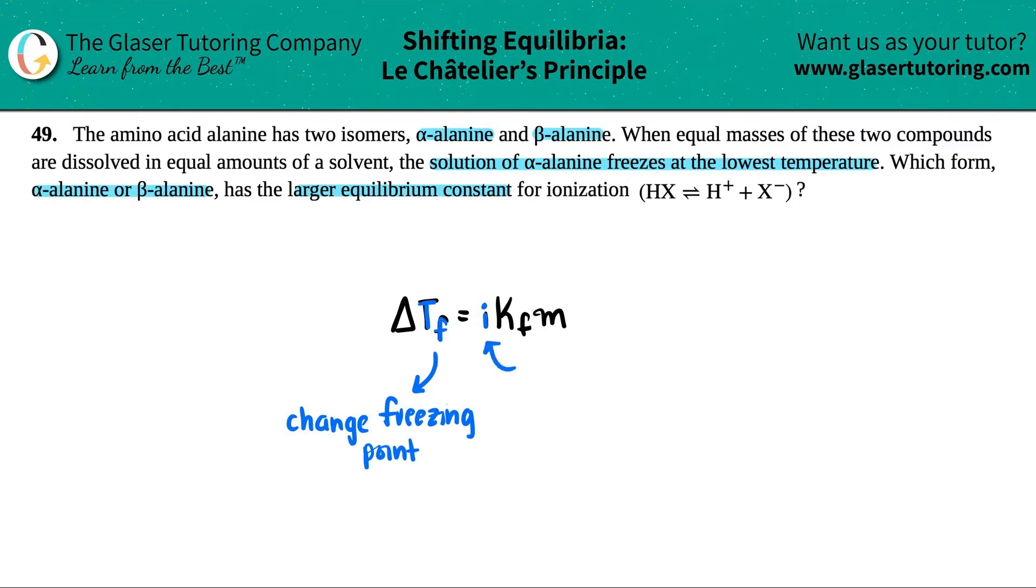Here's an interesting thing: the i value is basically the number of ions. If we have alpha alanine and beta alanine, and they said there were equal masses dissolved in equal amounts of solvent, molality is the moles of solute divided by kilograms of solvent.